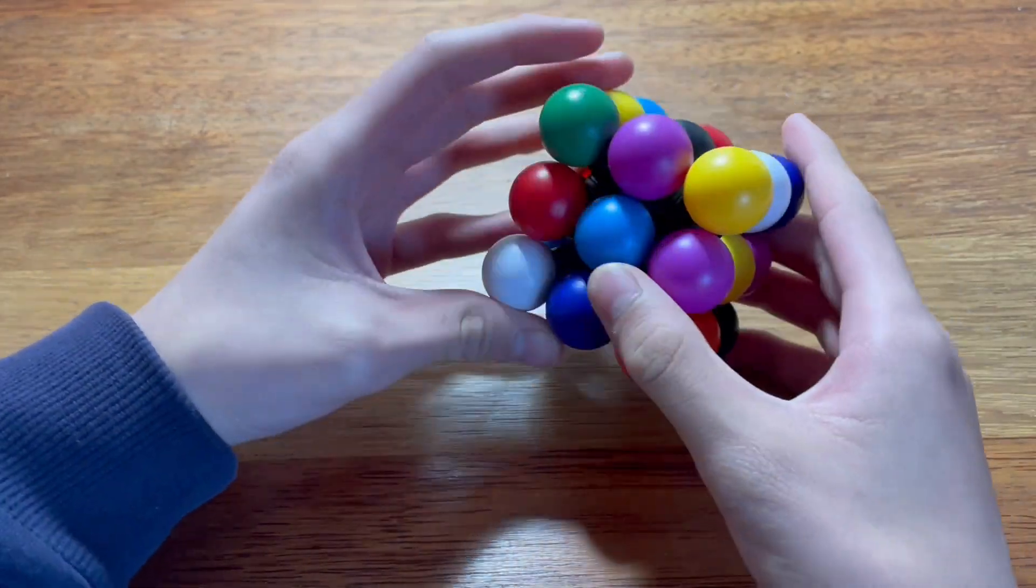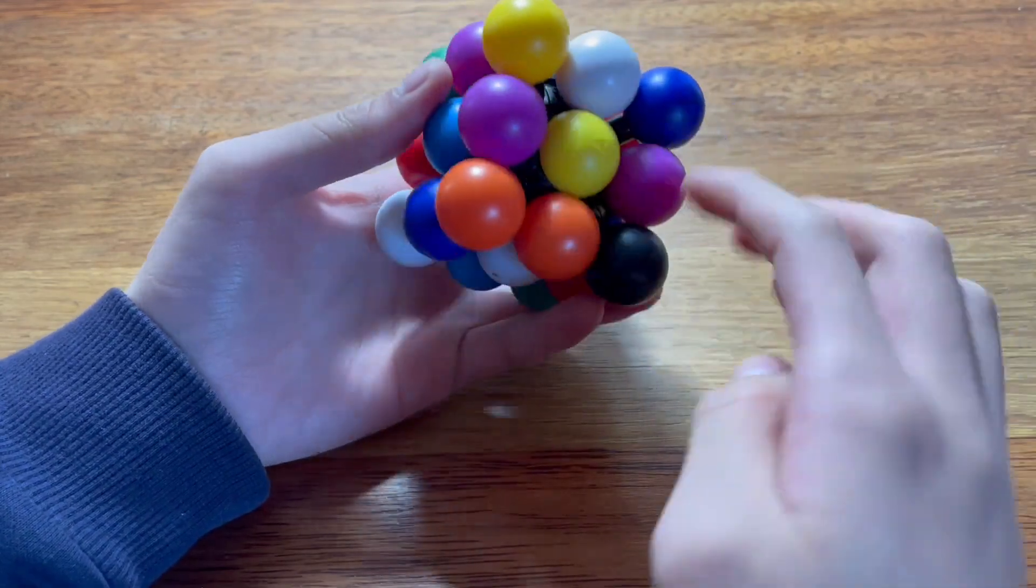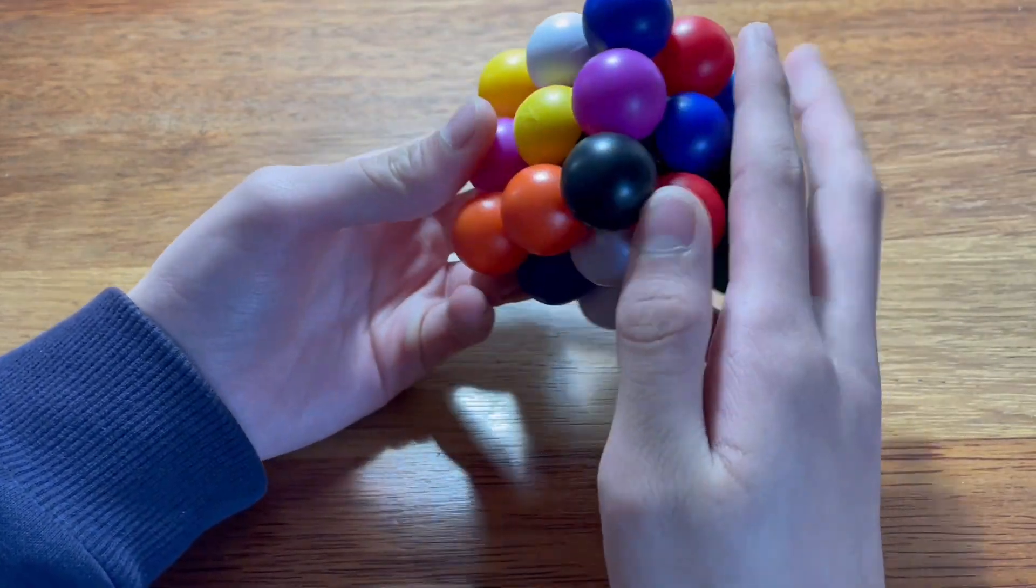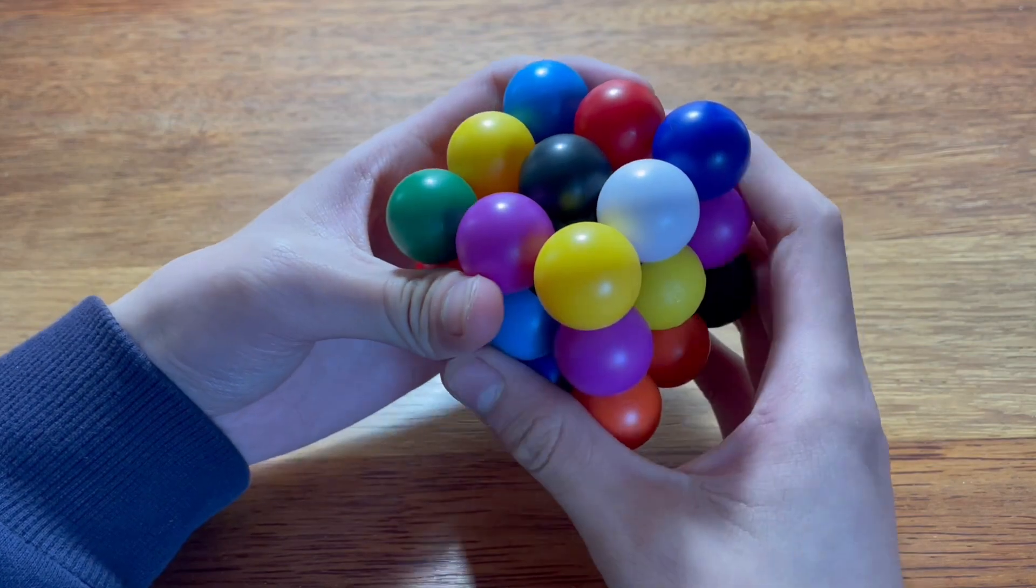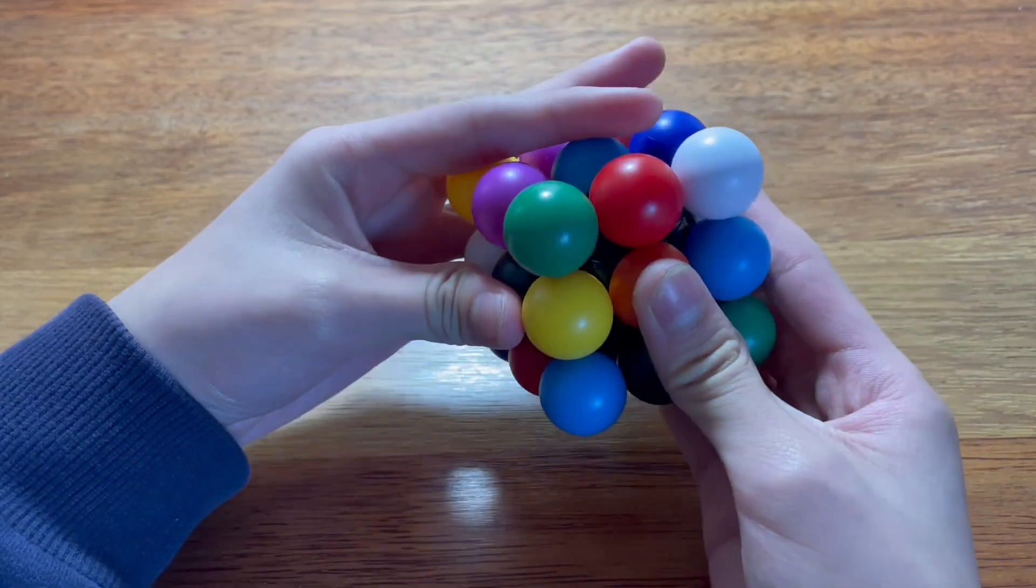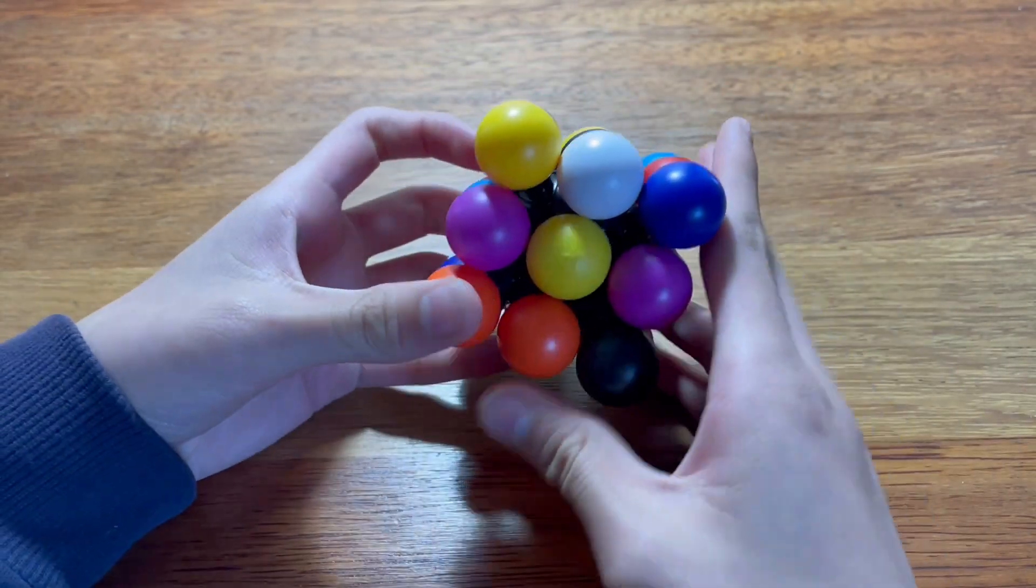I'm pretty sure the objective is to get one color on each of the different sides. So that means there should be nine colors. Other than that, I don't really have any prior knowledge of how to solve this. So let's just try it.